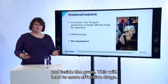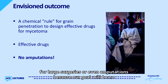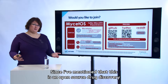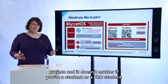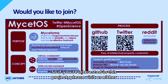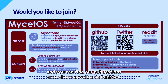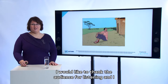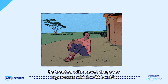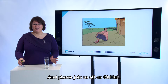This chemical rule will help us design new molecules for Mycetoma treatment and adapt existing molecules to penetrate more easily inside the lesion and grain, leading to more effective drugs. So this little boy with Mycetoma no longer has to fear large surgeries or amputations — our goal is no amputations for Mycetoma. Since this is an open source project, everyone can participate regardless of level. Please visit us on Twitter, GitHub, and find our publications on PubMed. Thank you for your attention — please join us on GitHub.